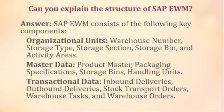Can you explain the structure of SAP EWM? SAP EWM consists of the following key components: organizational units — warehouse number, storage type, storage section, storage bin, and activity areas; master data — product master, packing specifications, storage bins, handling units; and transactional data — inbound deliveries, outbound deliveries, stock transport orders, warehouse tasks, and warehouse orders.